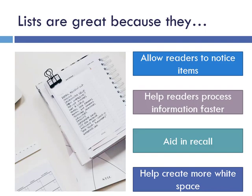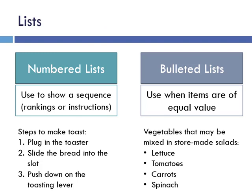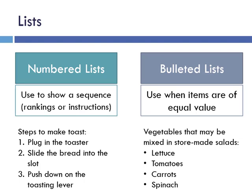Next, let's talk about lists. They're great because they allow readers to notice items, help process information, aid recall, and help create more white space. There are two ways to think about this: numbered or bullet lists, each used for a different purpose. Numbered lists are more sequential — like steps in a recipe or how to submit something. A bulleted list typically doesn't have a particular sequence and puts all items at equal value. You should not have just one bullet point on a list — if you're using a list, be consistent with it.